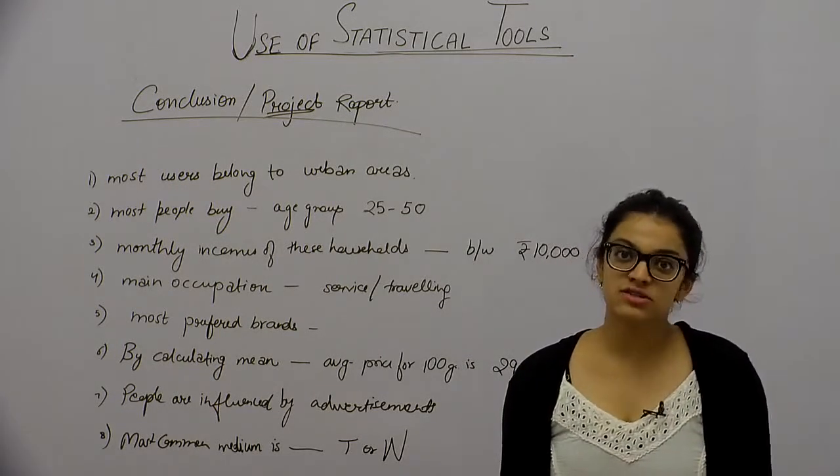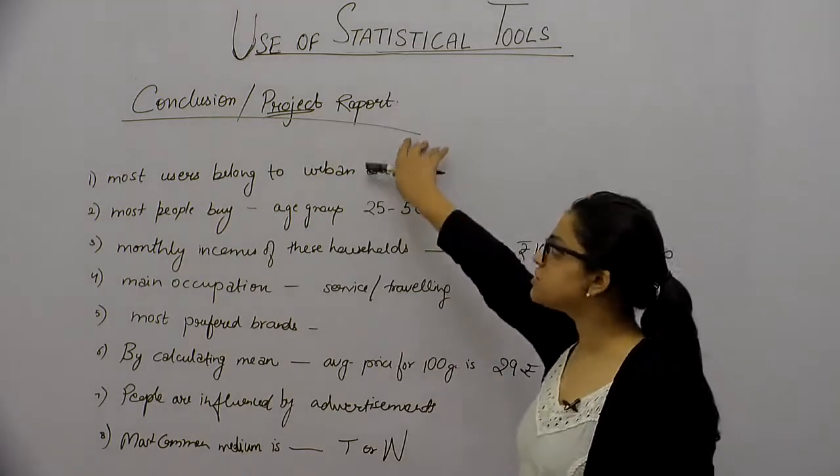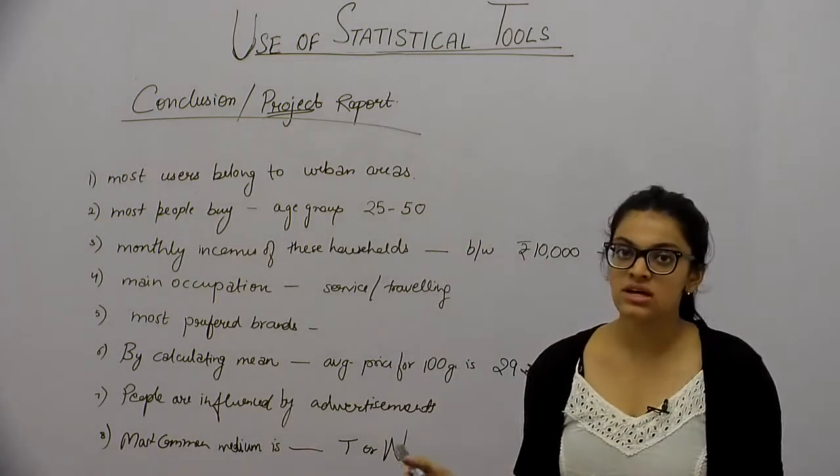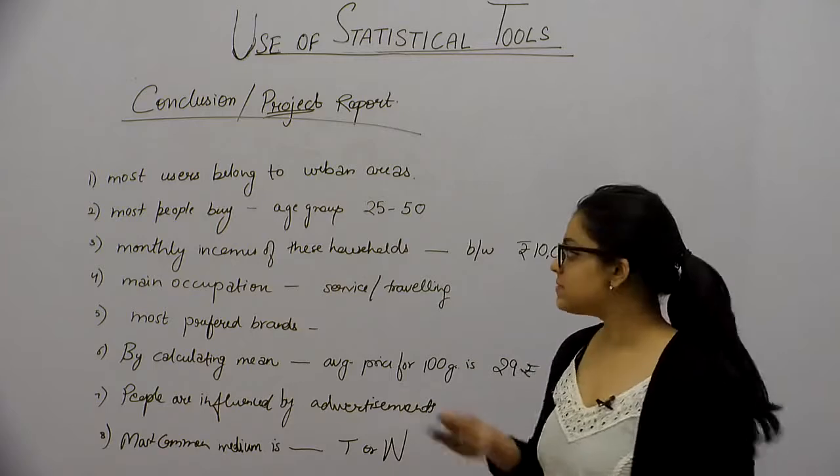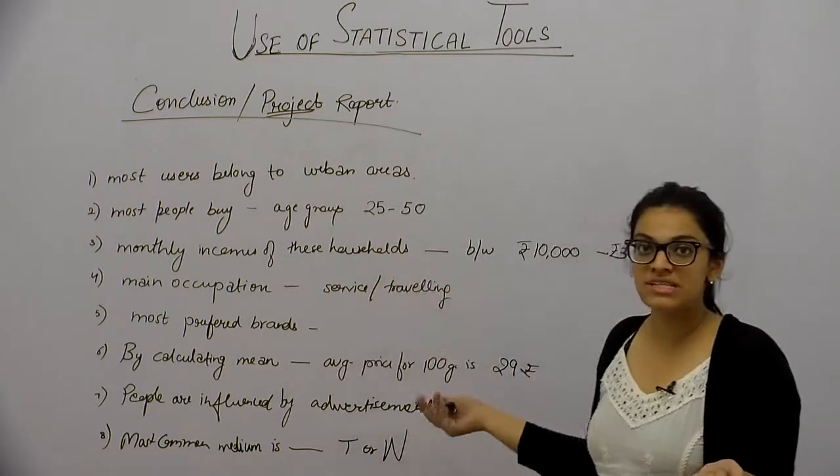So the next part and the last part is the project report in this sample project. It is made a conclusion and a project report. So how will you make a conclusion? If you want to make a list down, we have seen a lot of characteristics. So according to this, we have a list down.